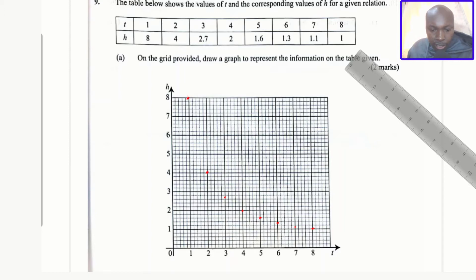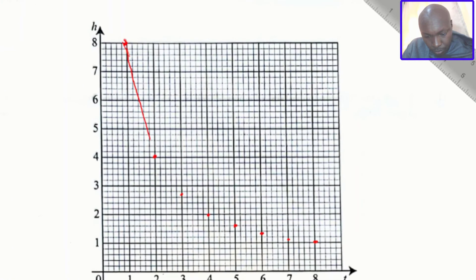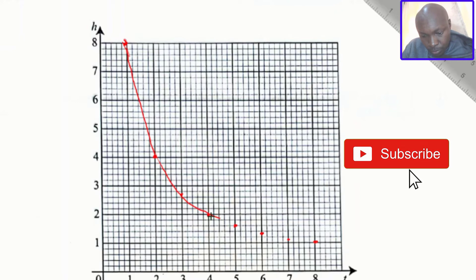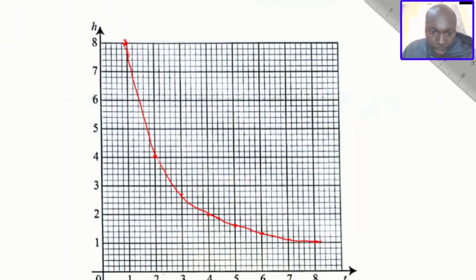So that is what I'm supposed to have. So the next thing you're going to do is to join these points using a smooth curve. So that is the curve. Now the next question is: